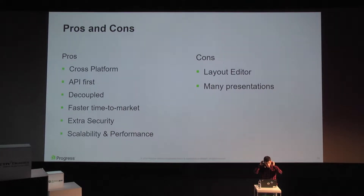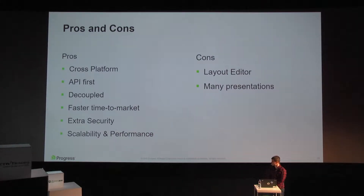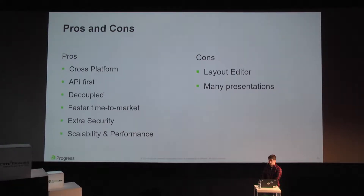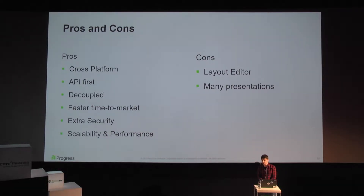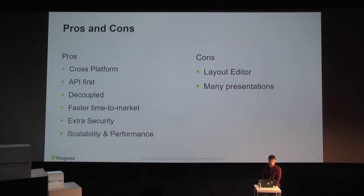The content and the representation layer are separated — decoupled — so there is no polluting of the data or the API. Users can reach a faster time to market; if they have a campaign targeting mobile devices first, then desktop, then smartwatches, everything can be delivered separately. There is extra security with the headless CMS as we can exclude the back-end user interface from the public-facing portal, achieving a lower surface of attack.